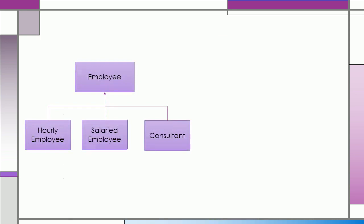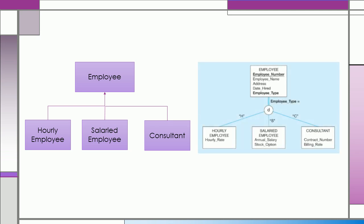As an example, we have an employee entity, which has the subtypes hourly employee, salaried employee, and consultant. We can create a separate table for each supertype, which we call employee, and has the following attributes: employee number, employee name, address, date hired, and employee type.